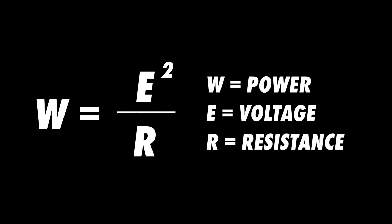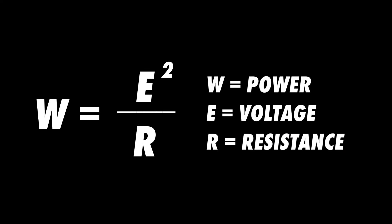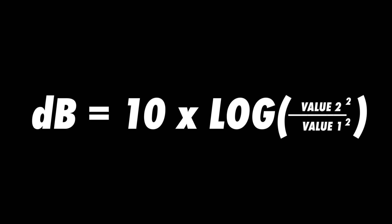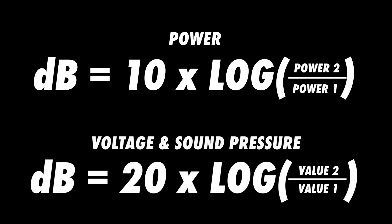The reason we multiply by 20 is explained by the power equation. In this equation, W is power, E is voltage, and R is resistance. Notice that voltage is squared in this equation — power is proportional to voltage squared. This is why we multiply by 20 when finding decibels of voltage or other non-power values. Another way to come to the same answer would be to square each voltage value before finding the ratio. Quantities that are not power must be made proportional to power. To recap: anytime you're comparing power quantities in decibels, multiply the bell formula by 10. Anytime you're comparing non-power quantities in decibels, multiply the bell formula by 20.